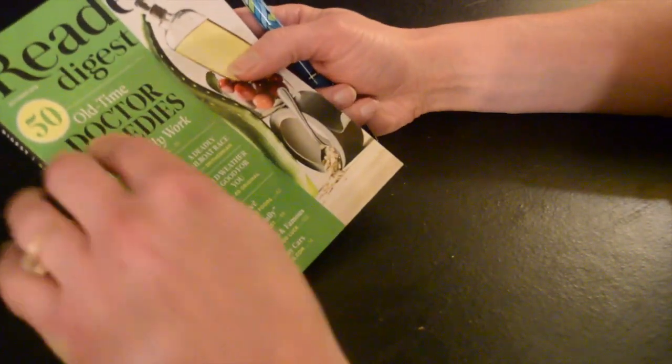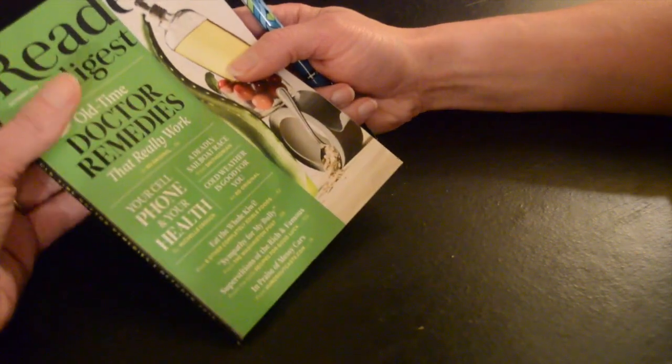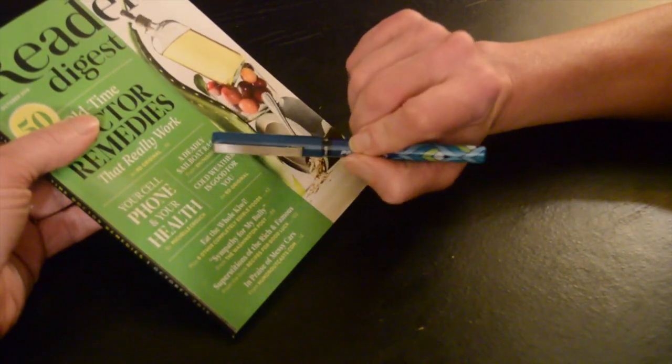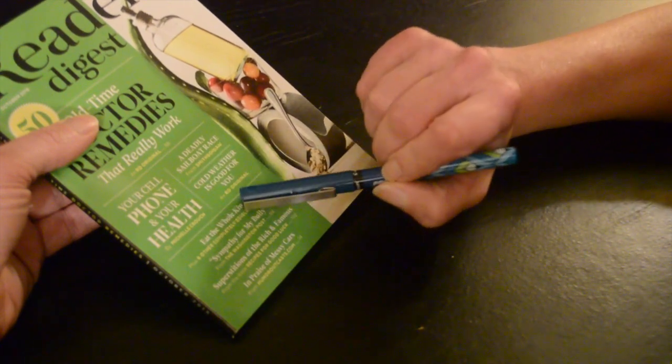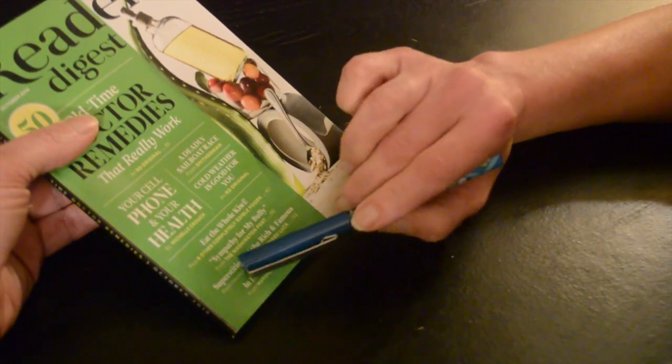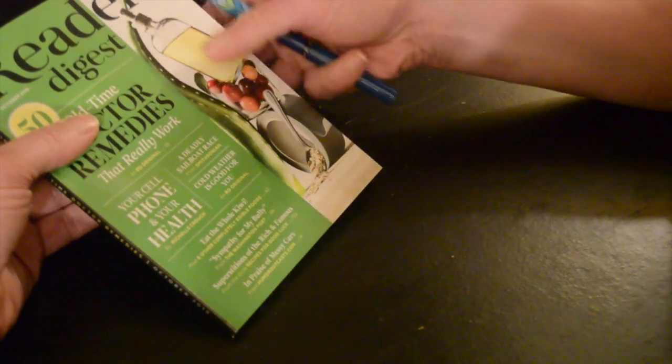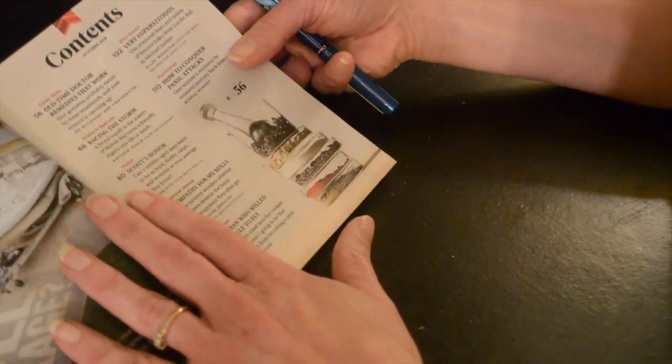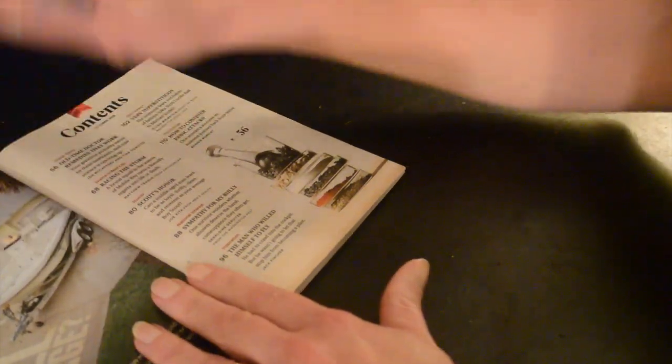So on the cover we have 50 old time doctor remedies that really work. We have your cell phone and your health, a deadly sailboat race, cold weather is good for you, eat the whole kiwi, sympathy for my bully, superstitions of the rich and famous, and in praise of messy cars. There's a lot of articles in here. I wish I could read all of them, but that's too much.